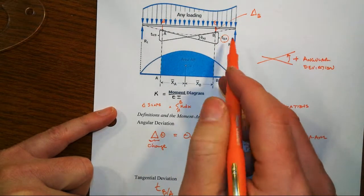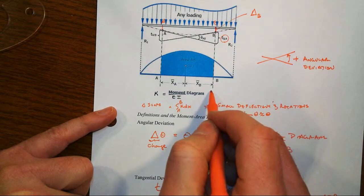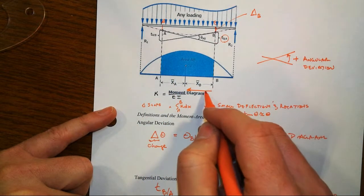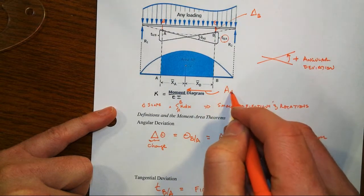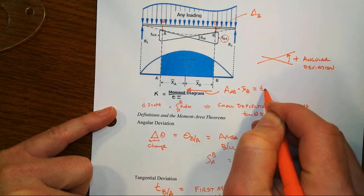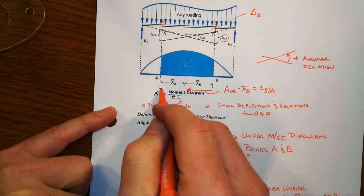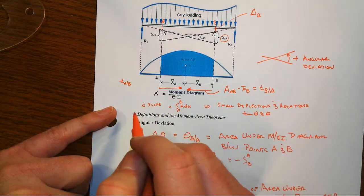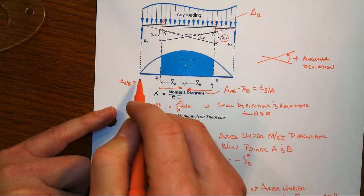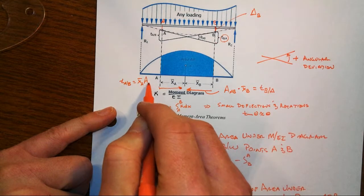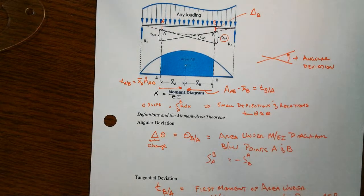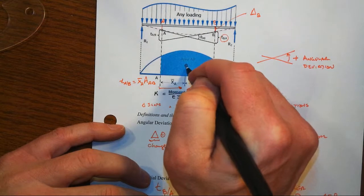If we were doing T_B with respect to A, this moment arm that I'm referring to is measured from B over to the centroid of this area. We'd use this area times X bar B to get our T_B with respect to A. On the other hand, if we wanted T_A with respect to B, which is not the same thing as the other one, then we're gonna take that same area but with a different moment arm involved.